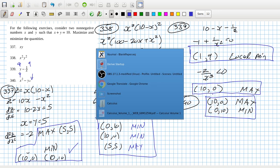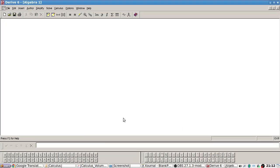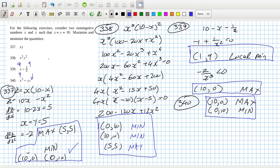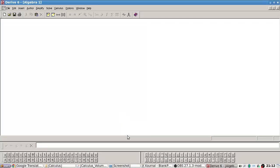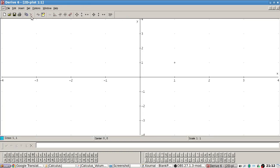So I should check out 339. So, y, which is 10 minus x minus 1 over x. Okay, let's graph that.